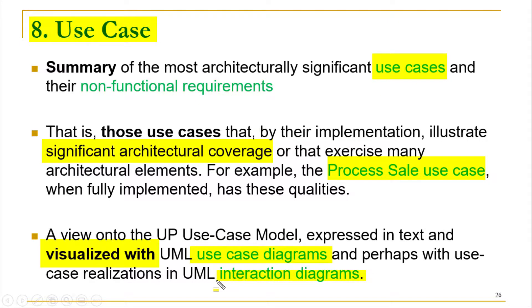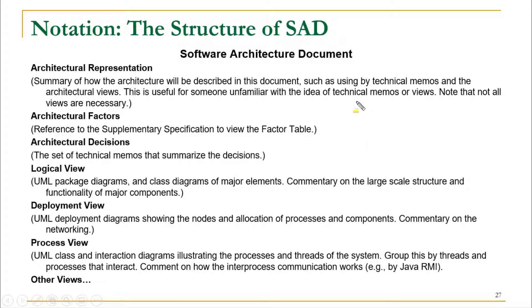There is no special fixed template for a software architecture document, but you can arrange it by starting with an architectural representation section telling the reader how the document is organized, then presenting each view — process view, deployment view, logical view, and so on — one by one. For every view, make sure you have two parts: the diagram and the text.